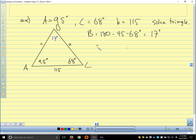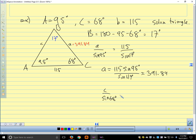Should we do them in alphabetical order? Yeah. A over sine of 95 equals 115 over the sine of 17. So A is 115 sine of 95 over sine of 17, and plug that in my calculator, and I get about 391.84. And then to find side C, I'm going to use the same ratio here. So I'm going to say C over the sine of 68. Shouldn't it be sine of 17, not sine of 117? Yes. Thanks. It's Friday afternoon.